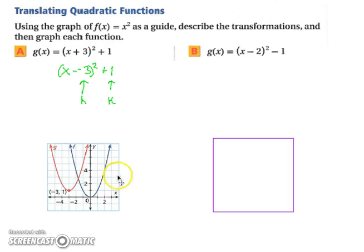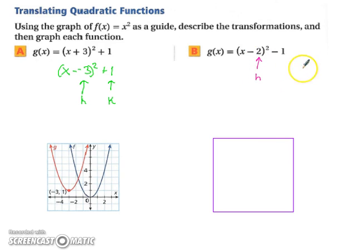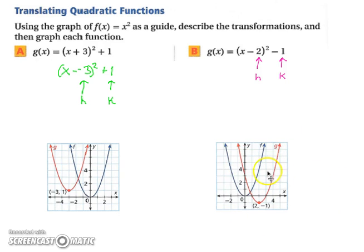Take a moment and pause the video and try part b. For part b, we have a minus 2, so it's already in the standard form. Our h is 2 and k is negative 1. Therefore, the graph is going to the right 2 units and then down 1 unit.